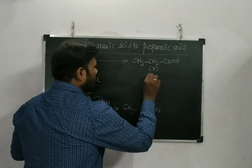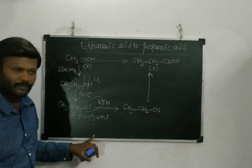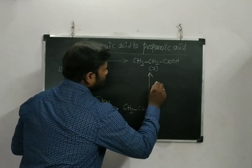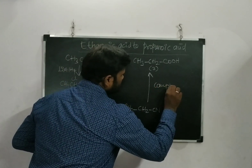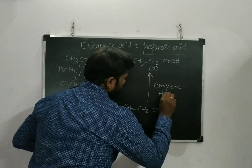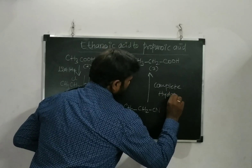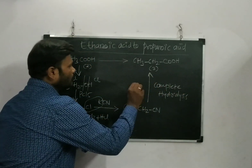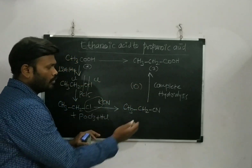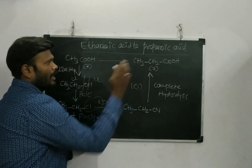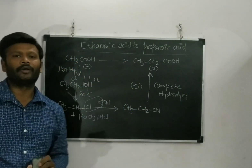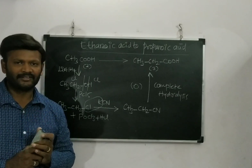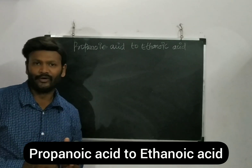Once I got the nitrile CH3CH2CN, it can undergo oxidation or complete hydrolysis. If I do oxidation, I will be getting my product as propanoic acid. Now for the reverse conversion — that is propanoic acid to ethanoic acid.